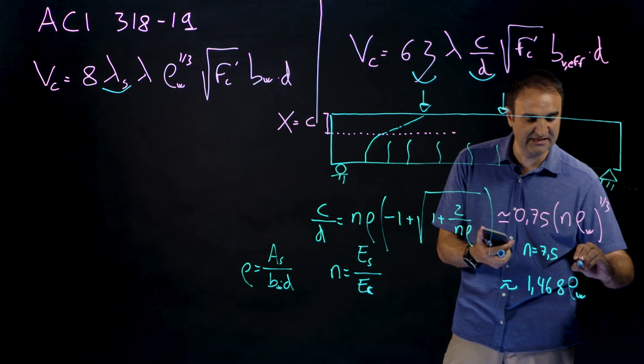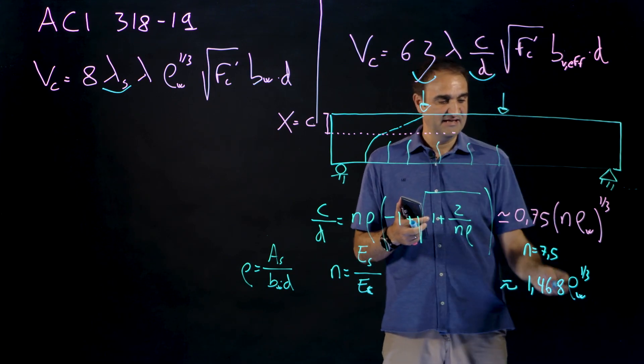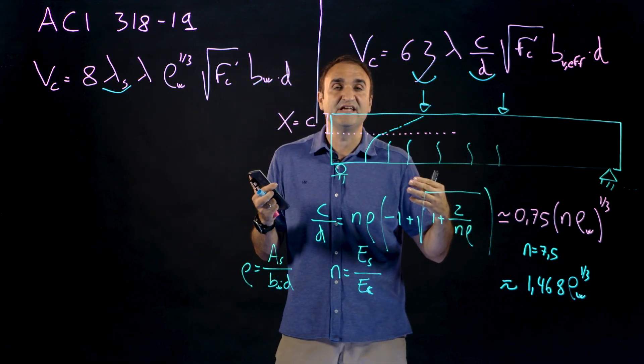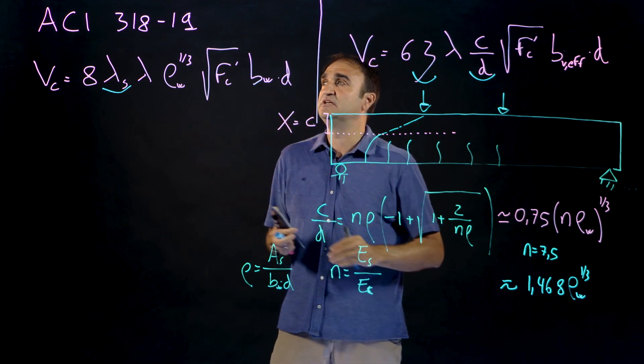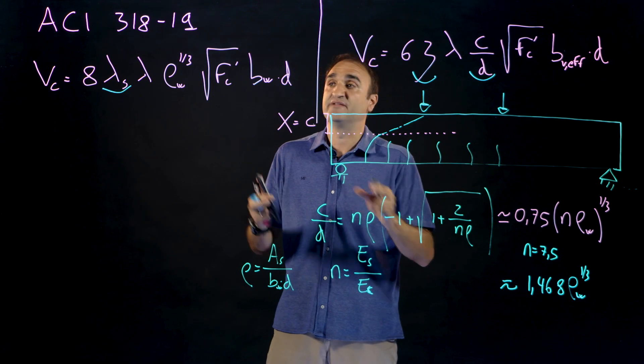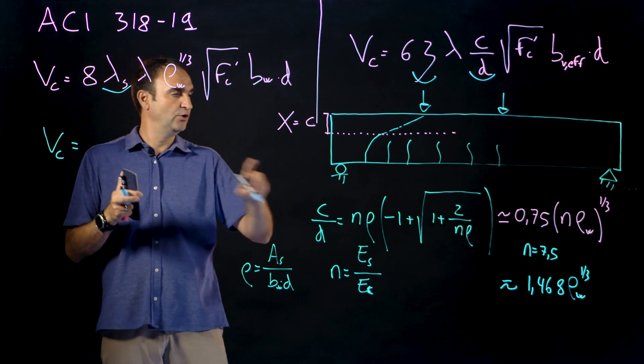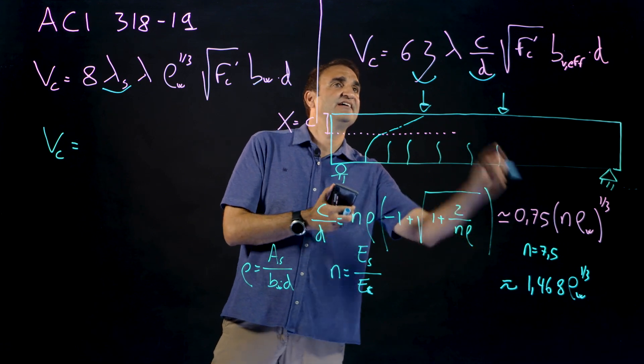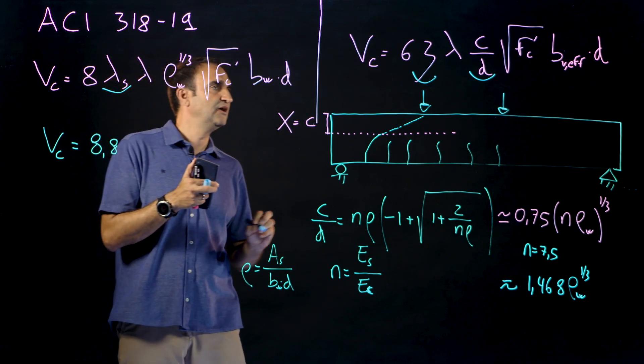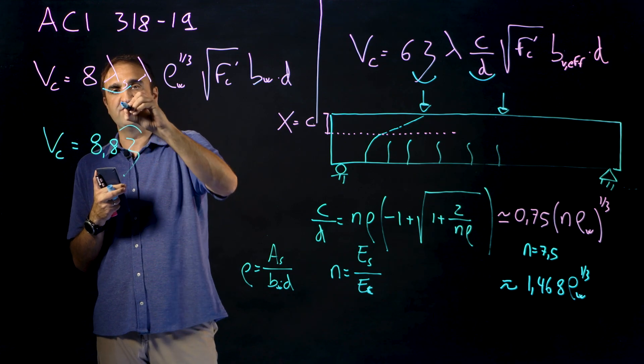So we have here 1.468 times the amount of longitudinal reinforcement to one third. So right now look at this equation, because c over d can be written this way. So our proposal, that it must be understood as a possible model to give a mechanical interpretation to this new ACI equation, but it's not exclusive. So there are other models that can also give you an interpretation, but I think that this may help when we have something different.